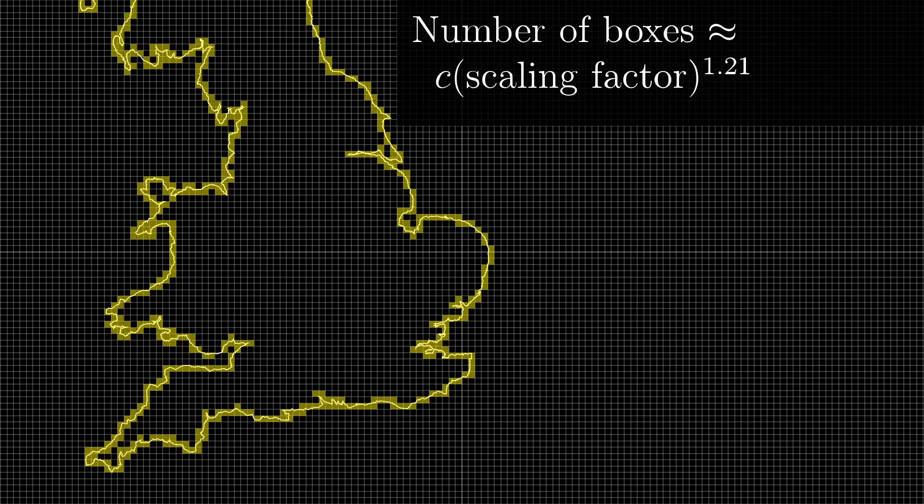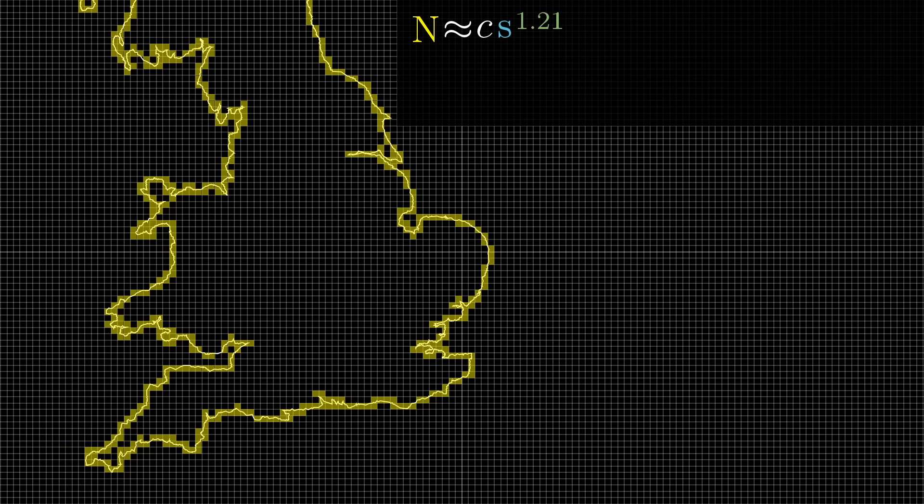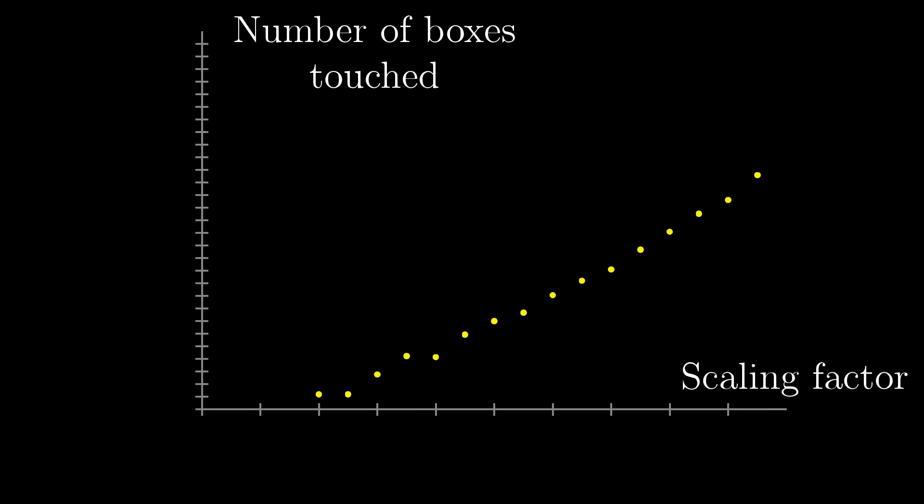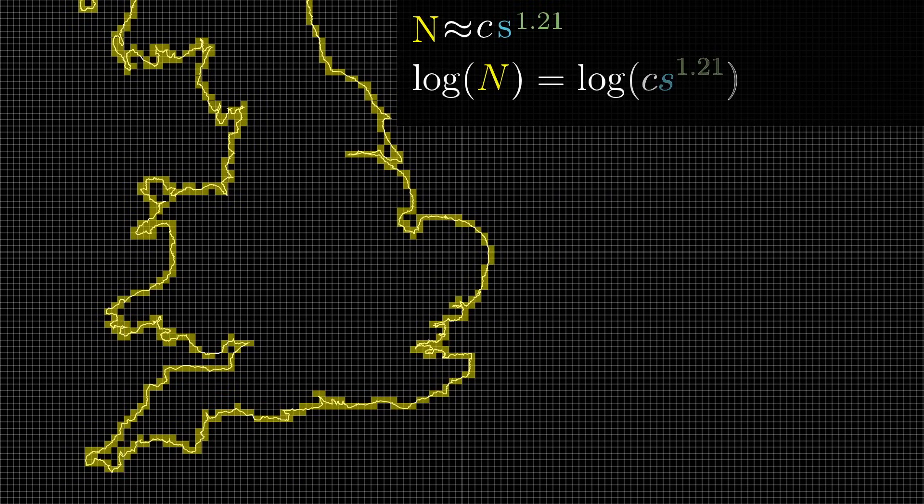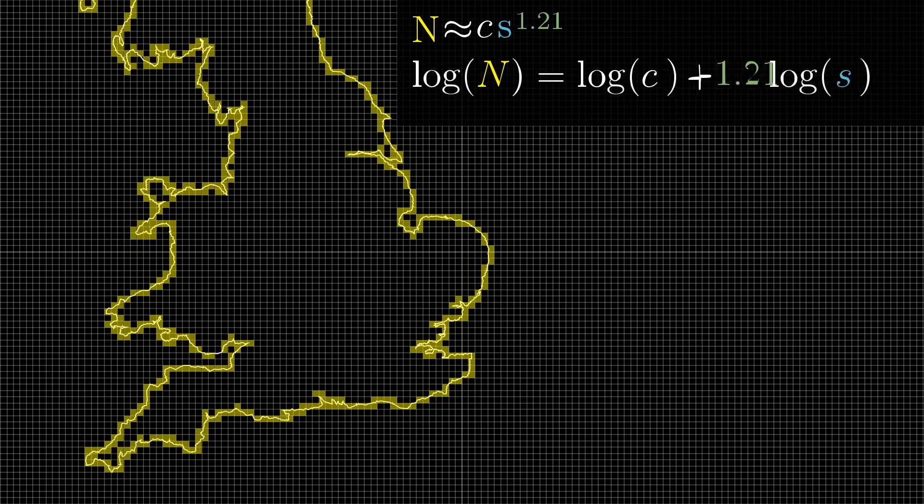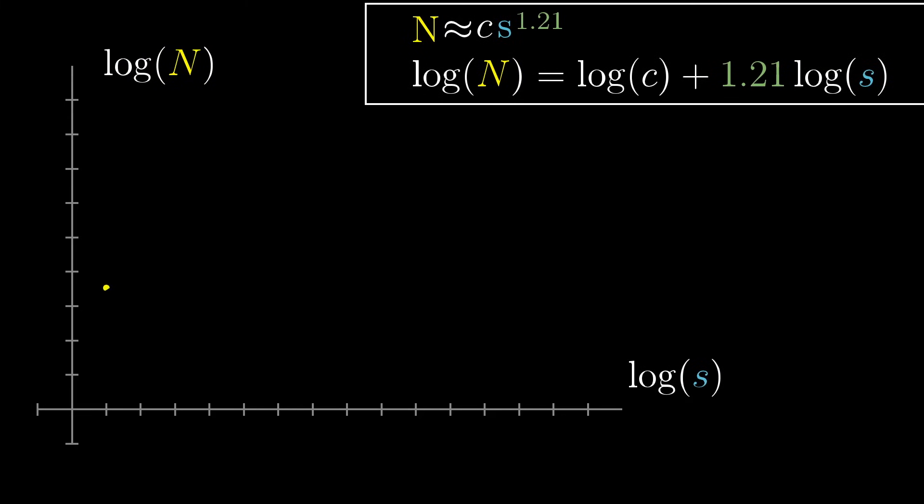So what I'm saying here is that if you scale this shape by some factor, which I'll call S, the number of boxes touching that shape should equal some constant multiplied by that scaling factor raised to whatever the dimension is, the value that we're looking for. Now, if you have some data plot that closely fits a curve that looks like the input raised to some power, it can be hard to see exactly what that power should be. So a common trick is to take the logarithm of both sides. That way, the dimension is going to drop down from the exponent and we'll have a nice clean linear relationship. What this suggests is that if you were to plot the log of the scaling factor against the log of the number of boxes touching the coastline, the relationship should look like a line and that line should have a slope equal to the dimension.